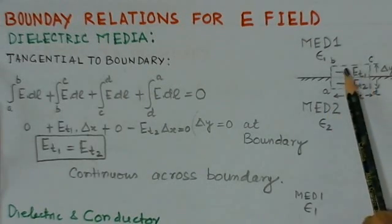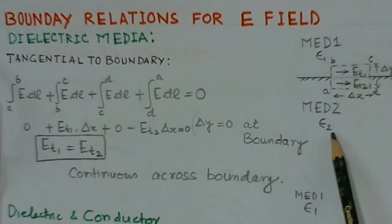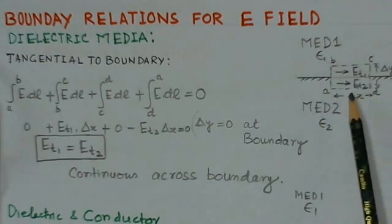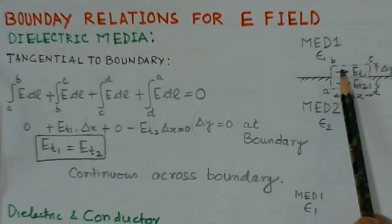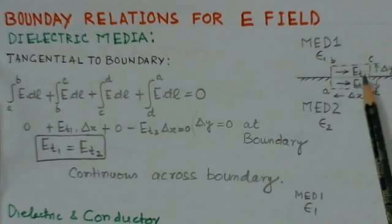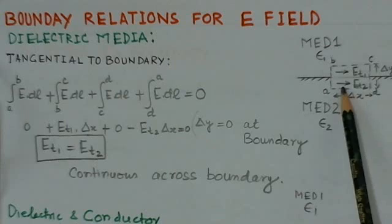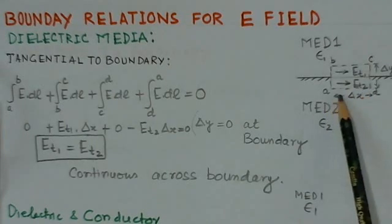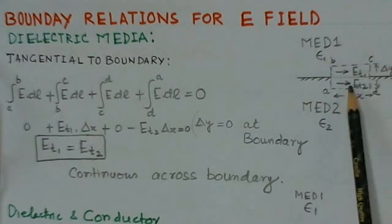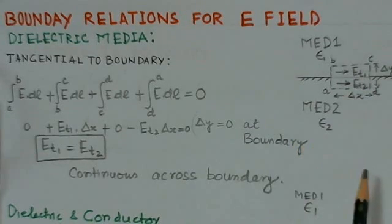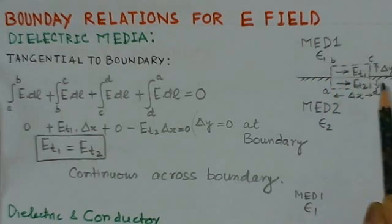In this case, we have two media — medium 1 and medium 2 — with medium 1 having dielectric constant epsilon 1 and medium 2 having epsilon 2. We consider a rectangle placed halfway across both the media, and we write the tangential electric field as Et1 in medium 1 and Et2 in medium 2. We then take the line integral around this path.